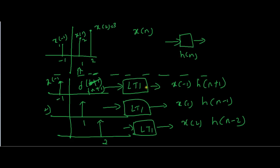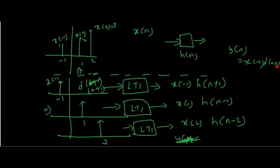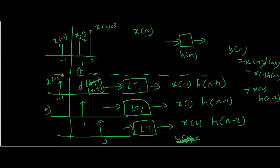Since this is a linear time invariant system, the output is the linear combination of all those individual responses. So Y(N) equals X(minus 1) H(N plus 1) plus X(1) H(N minus 1) plus X(2) H(N minus 2). This is the idea behind convolution: if we just know the impulse response, we can determine the output. Because I knew the impulse response and the amplitude of each impulse, I was able to find the output of the whole system for input X(N).